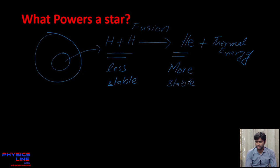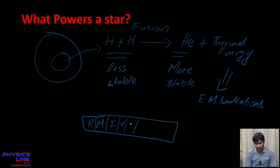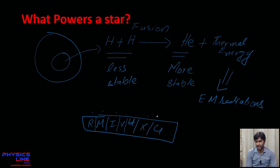This thermal energy is emitted in the form of electromagnetic radiation. The EM spectrum starts with radio waves, microwaves, infrared, the visible region, ultraviolet, X-rays, and finally gamma rays. You should remember this spectrum with the mnemonic: 'Raging Martians Invaded Venus Using X-Ray Guns.'